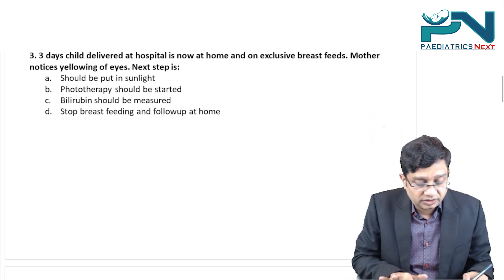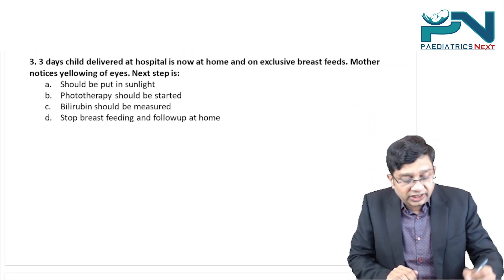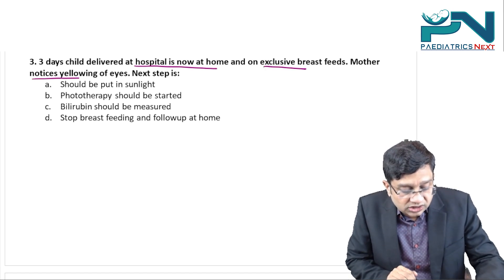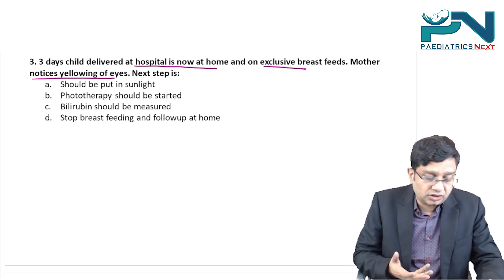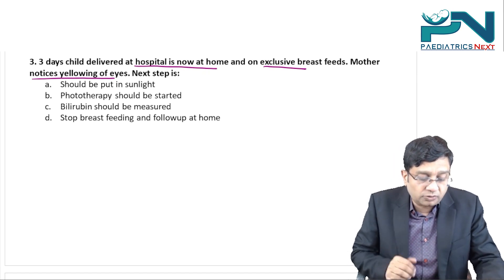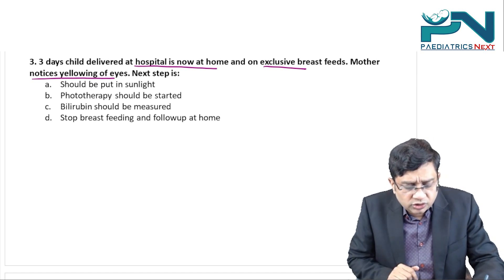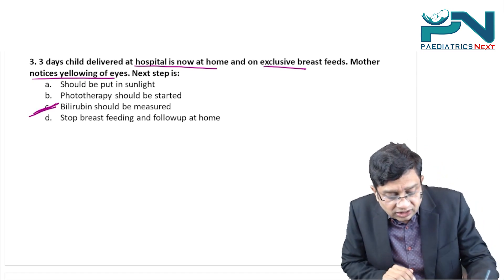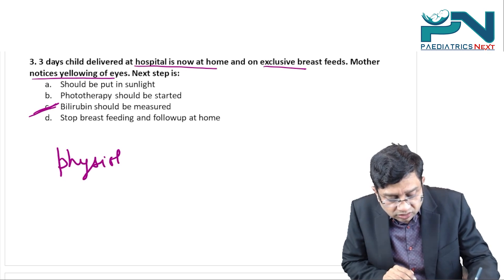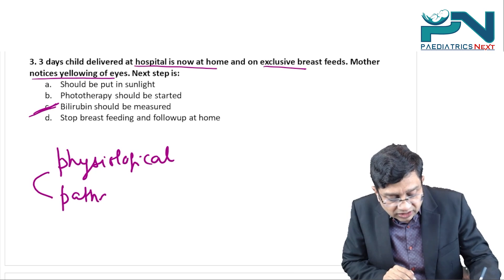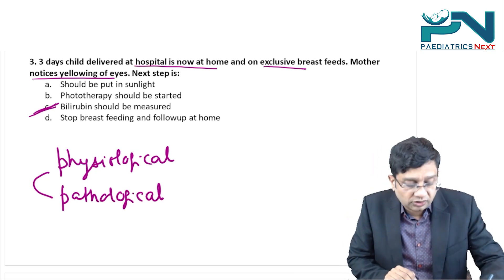A three-day-old child delivered at hospital is now at home on exclusive breastfeeds. Mother notices yellowing of the eyes. The next step: Should you put the child in sunlight, start phototherapy, measure bilirubin, stop breastfeeding, or follow up at home? On day three, this can be both physiological and pathological jaundice. The first step is to measure bilirubin — bilirubin should be measured.